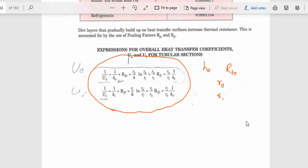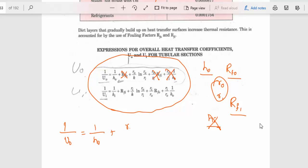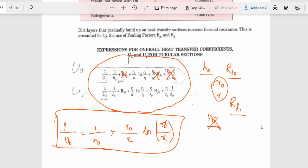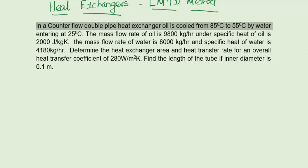In the U formula, there are terms: h_o (outer heat transfer coefficient), R_fo (outer fouling resistance), R_fi (inner fouling resistance), and h_i (inner heat transfer coefficient). If any of these values are not given in the problem, just omit those terms. If you omit all three additional terms, the formula becomes: 1/U_o equals 1/h_o plus (r_o/k)·ln(r_o/r_i). Alter the formula according to the data given in the problem.